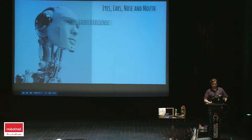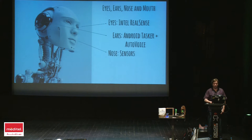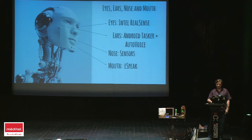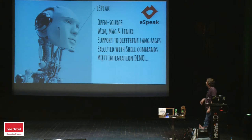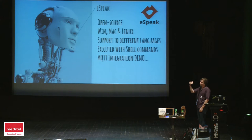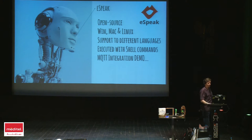Today we are going to use as eyes the Intel RealSense for emotion and gesture recognition. For ears we are using Android, Tasker, and AutoVoice. The nose is the alcohol sensor. For the mouth we are using eSpeak — an open source text-to-speech software for Windows, Mac, and Linux with different language support, integrated using shell commands. We don't have a native Java API for it, but I highly recommend eSpeak for text-to-speech.